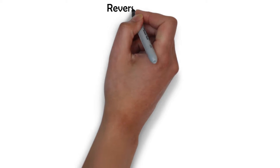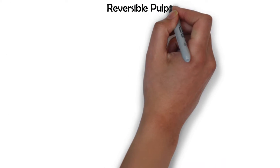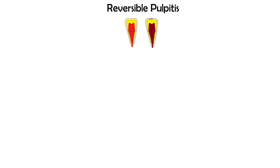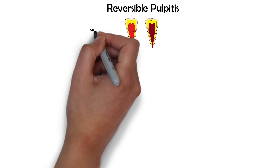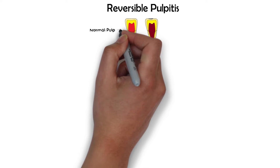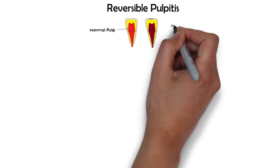Reversible pulpitis is an acute inflammatory condition of the pulp. Acute meaning that it is a short-standing inflammatory response.